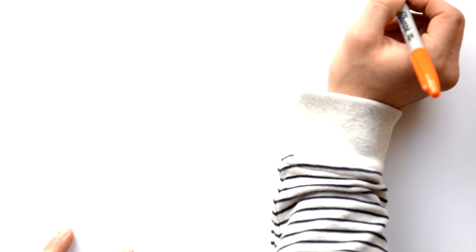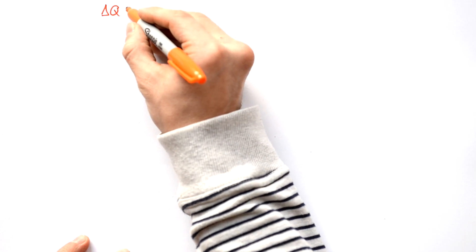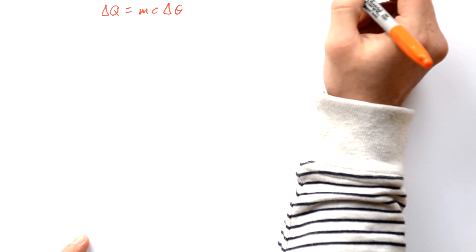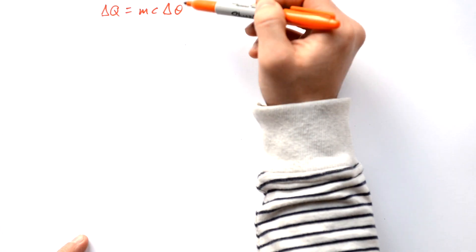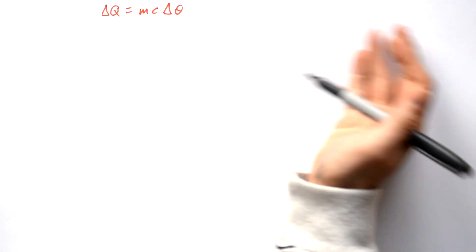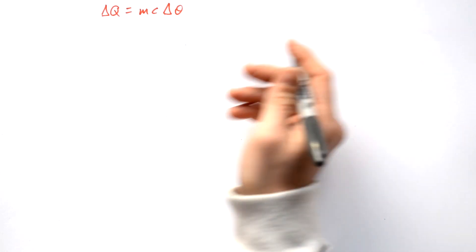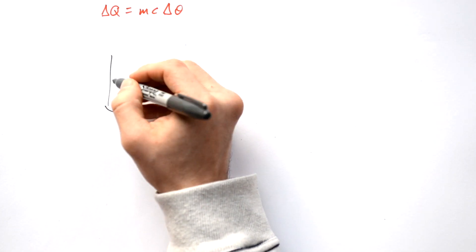So how could you calculate the SHC for a material? Let's look at our equation again. An alternative version at A-level uses delta Q — because Q is heat at A-level — equals MC delta theta, where C is the symbol for SHC and theta means temperature. So: energy, mass, SHC, change in temperature. Let's say we want to find out the specific heat capacity of iron.